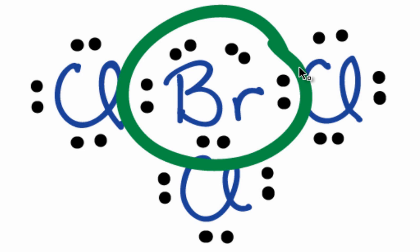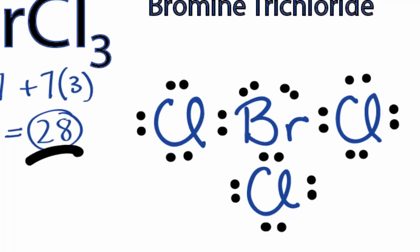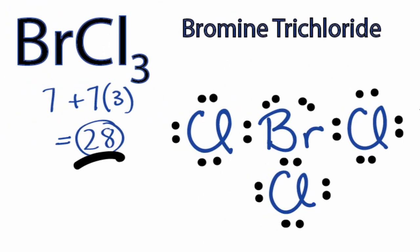We've also used all 28 valence electrons for the BrCl3 Lewis structure. So we're done, that's the Lewis structure for BrCl3. This is Dr. B, and thanks for watching.